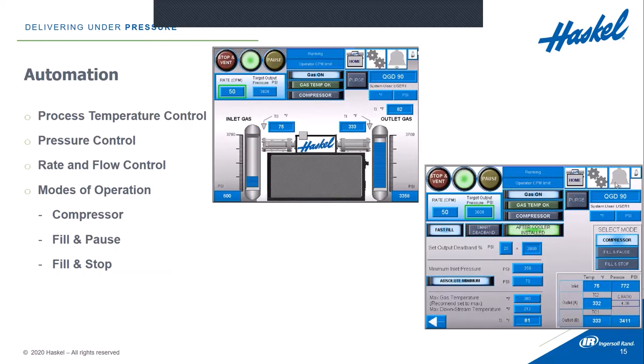With automation, the Q-Drive has some automation features built into it. When you're using the Q-Drive, you're going to use it in a few different modes of operation: compressor mode, fill and pause mode, and fill and stop mode. The job of the booster, as Dave was talking about earlier, is to take low pressure gas up to high pressure gas. During that, you're looking at a few different pieces of information critical to that performance: temperature, pressure, flow, and rate control.